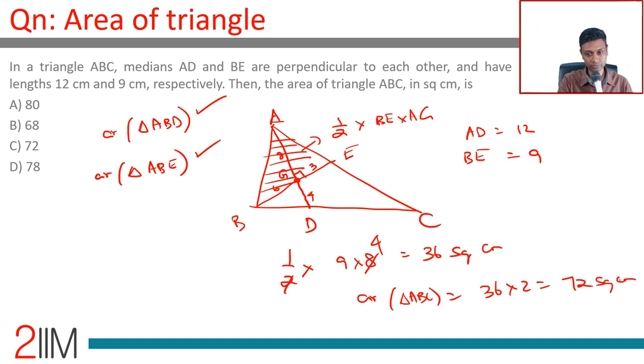The other way of doing this: taking area of triangle ABD as half times 12 times 6 equals 36, times 2 equals 72. The meeting point of medians is the centroid. Centroid divides the median in the ratio 2:1.